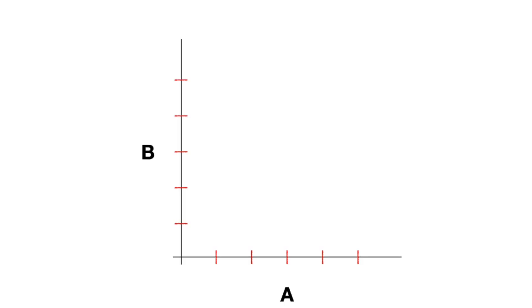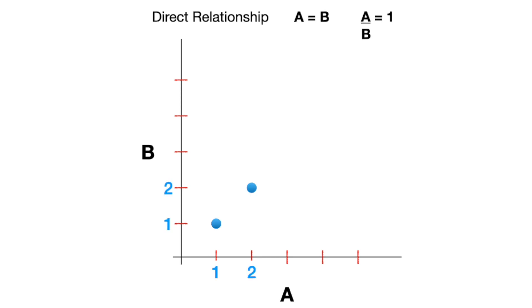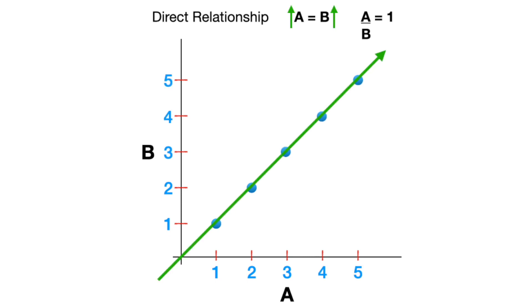Graphically, with direct relationships where a equals b, or a over b equals 1, you can see that as a increases, b increases, which gives us a linear graph, or a straight line.